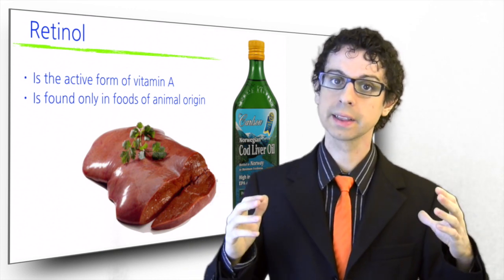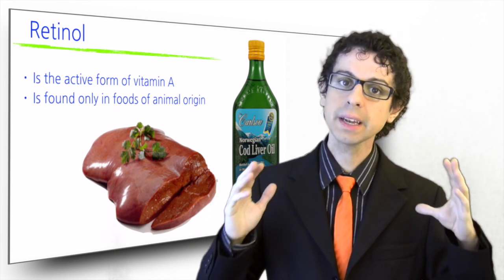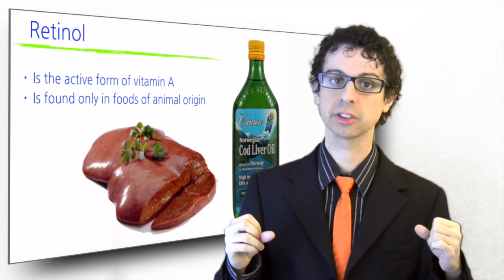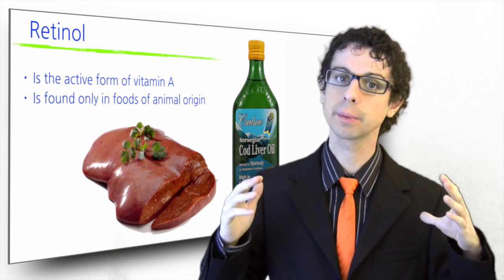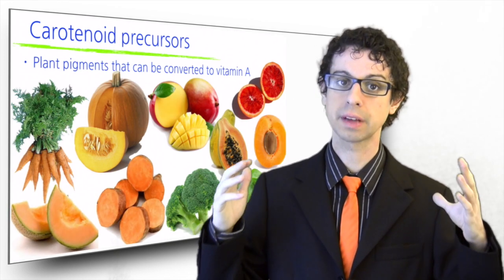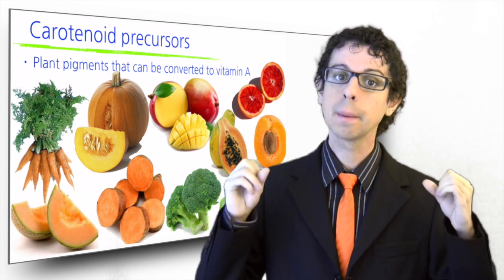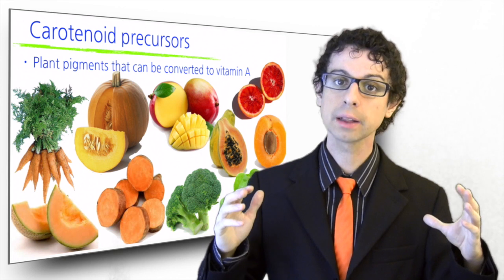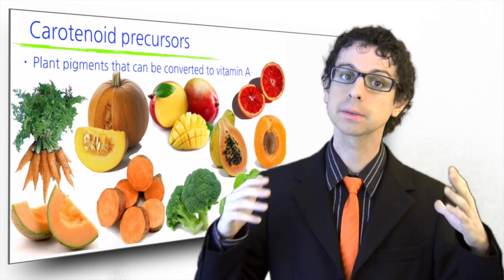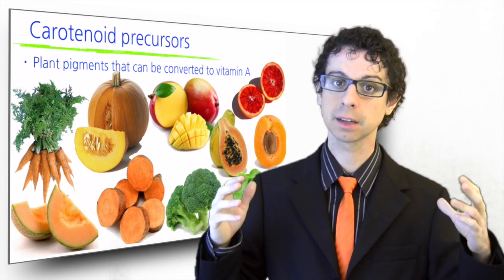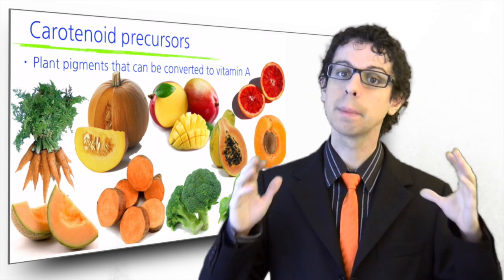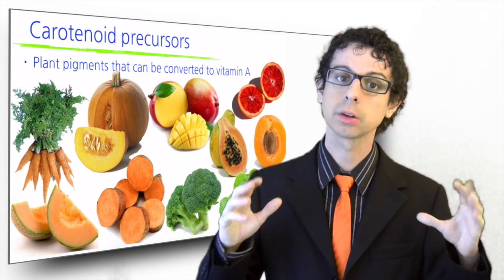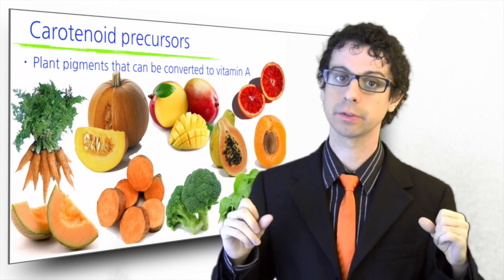Luckily for those who don't like liver and fish liver oil, vitamin A does not necessarily need to be eaten as such. In fact, it is a semi-essential vitamin, and it can be derived in our body from some plant pigments belonging to the family of carotenoids. Beta-carotene is the most efficient vitamin A precursor. It's the orange-yellow pigment that colors carrots, pumpkins, apricots, mangoes, papayas, cantaloupe, and sweet potatoes. But it is also found in green leafy vegetables such as spinach or broccoli, where its color is masked by the green of chlorophyll.